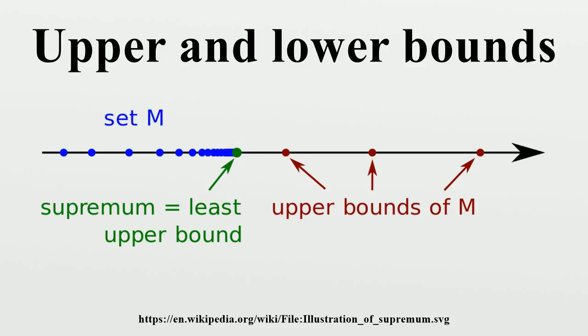Tight bounds. An upper bound is said to be a tight upper bound, a least upper bound, or a supremum if no smaller value is an upper bound. Similarly, a lower bound is said to be a tight lower bound, a greatest lower bound, or an infimum if no greater value is a lower bound.